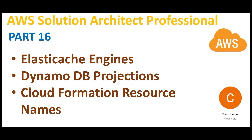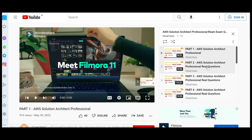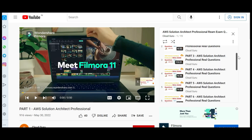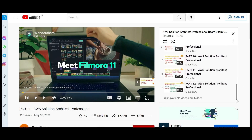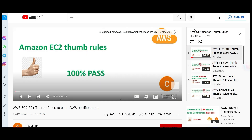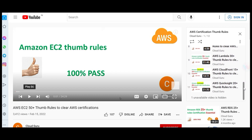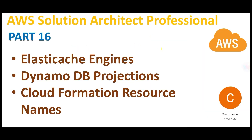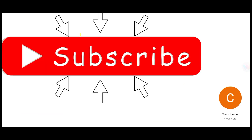Welcome to Part 16. We are looking at AWS Solution Architect Professional real certification questions. You can refer to this playlist — it has many parts that will help you clear this certification. There is also a playlist called 'AWS Certification Thumb Rules' with many thumb rules to help with the certification. In this part we will look at questions around Elastic Cache, DynamoDB projections, and CloudFormation resource names.